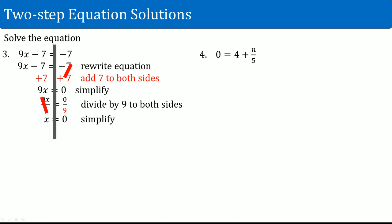To get x alone — right now it's 9 times x — to undo multiplication, you divide. Divide by 9 to both sides. Once you do that, you get x equals 0. Zero divided by 9 just becomes 0.